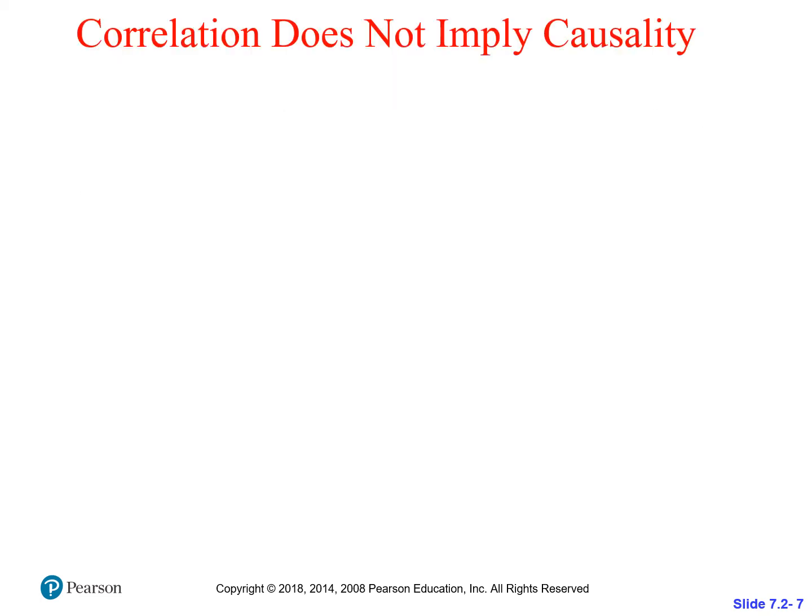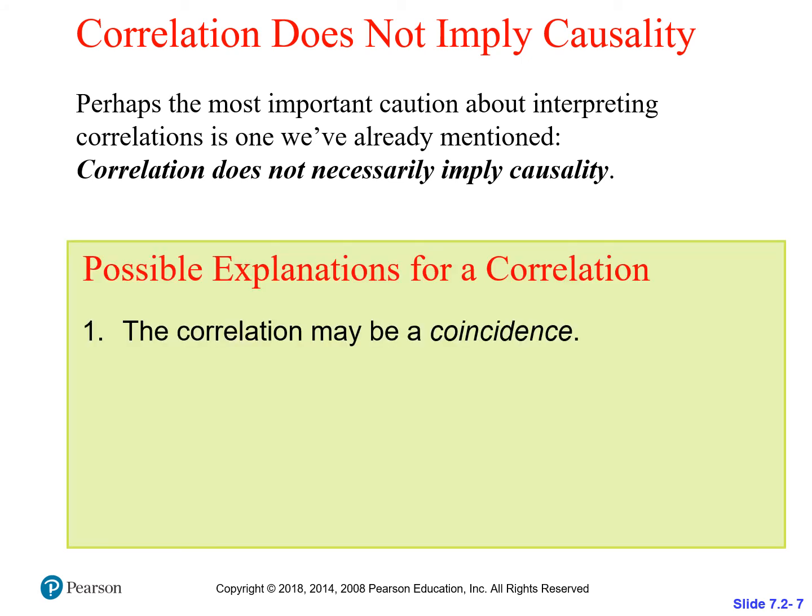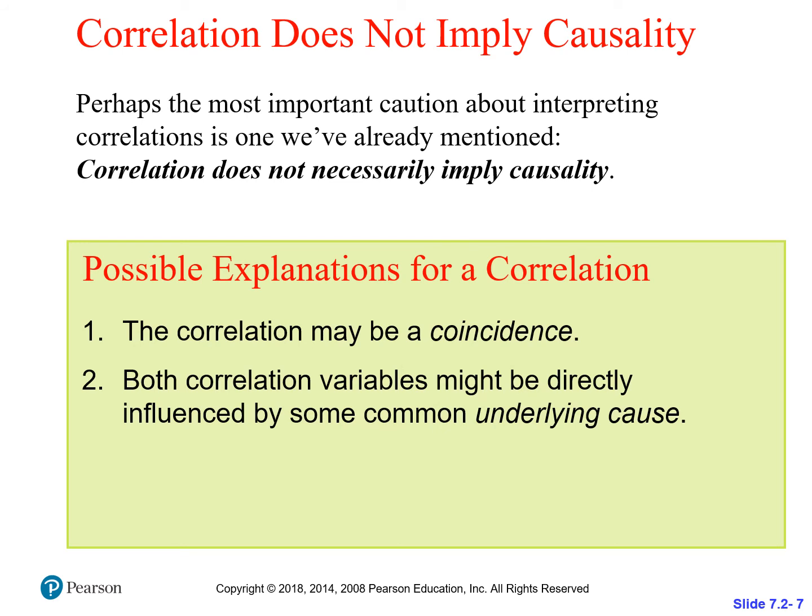Finally, correlation does not imply causality. Those are extremely important concepts to keep separate. A lot of really intelligent people get those confused. Just because there's a relationship doesn't mean that one is causing the other. There could be some underlying cause that's explaining both. The correlation may be a coincidence, or both correlated variables may be directly influenced by some common underlying cause.